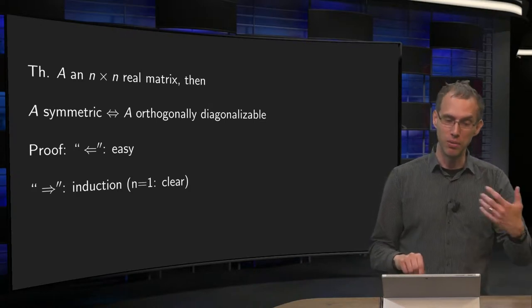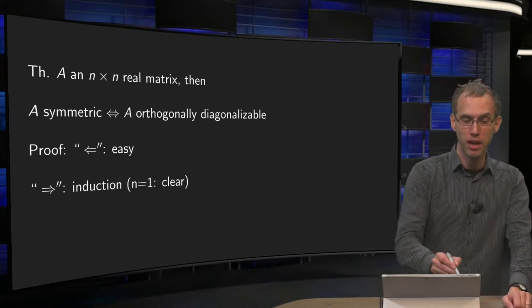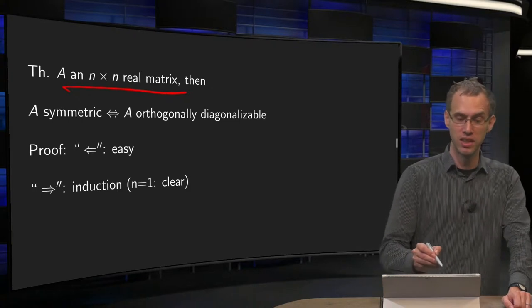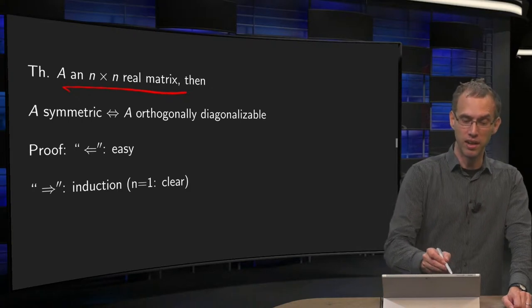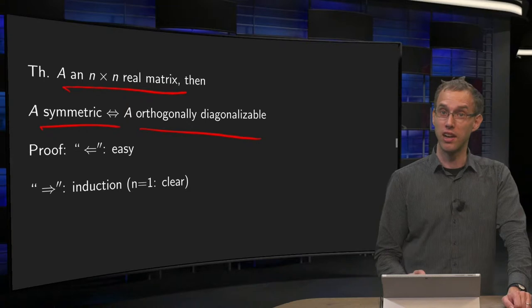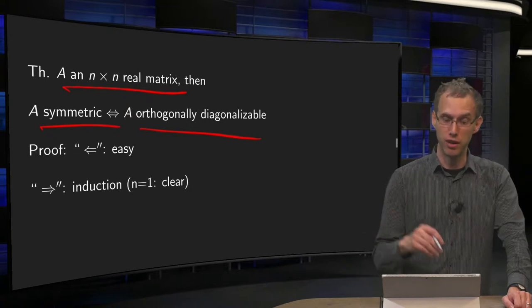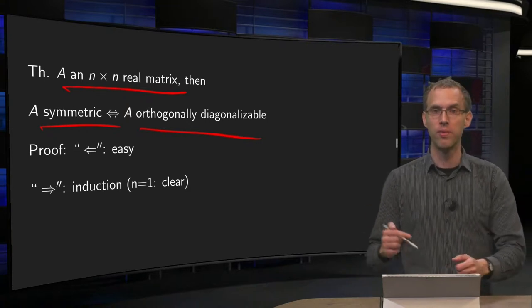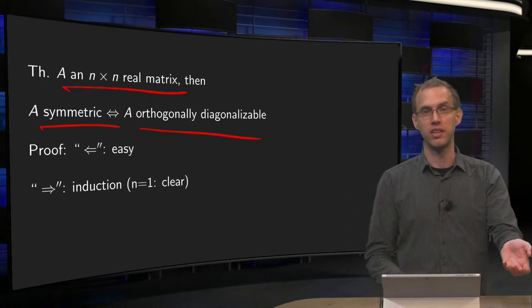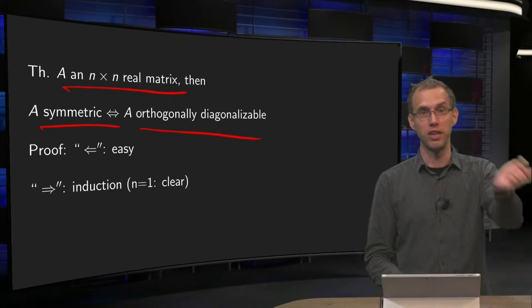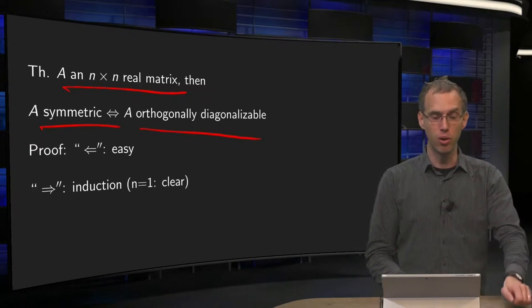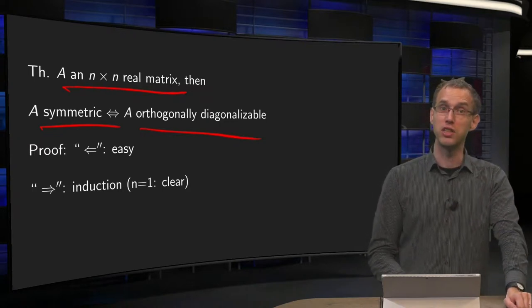So what again was the spectral theorem? If you have a square real matrix, then if A is symmetric, A is orthogonally diagonalizable and vice versa. This direction — orthogonally diagonalizable implies symmetric — is easy, but going the other way is harder.